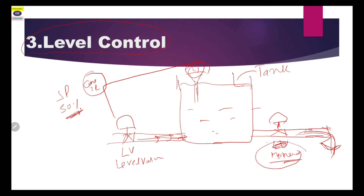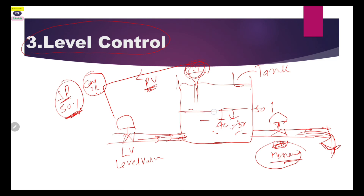We have to maintain 50 percent level of this tank. If the manual valve is opened, the level of the tank will reduce. Whenever the level goes from 50 percent to 40 or 30 percent, the level transmitter measures the actual current level and transfers the PV value to the controller. The controller compares this PV to the set value, and automatically gives command to the valve to open or close to maintain the required level. This is how level control works in oil and gas and instrumentation engineering.